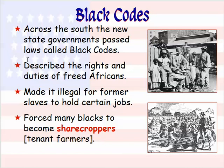Some of those state governments in the South passed new laws called Black Codes, which described the rights and duties — or maybe the lack of rights — of freed African Americans. These codes made it illegal for former slaves to hold certain jobs, likely the more prestigious higher-ranking positions like doctors and lawyers. They also forced many Blacks to become sharecroppers or tenant farmers. Essentially, they were laws designed to keep Blacks in the lower part of society. We'll get into greater detail about sharecropping shortly.